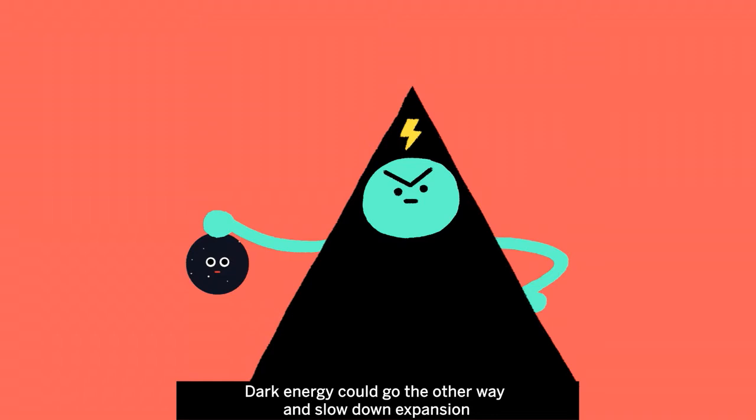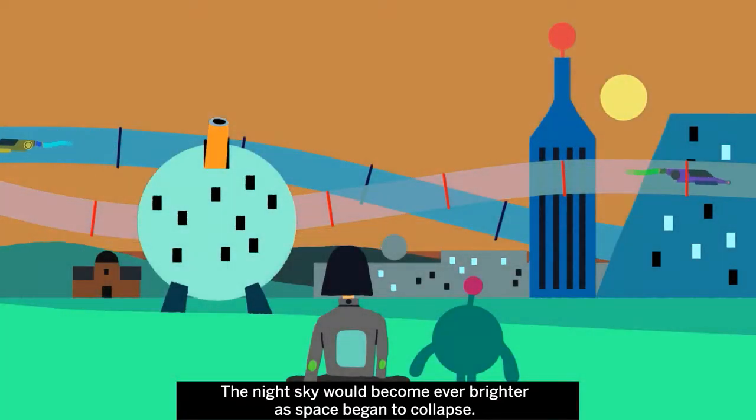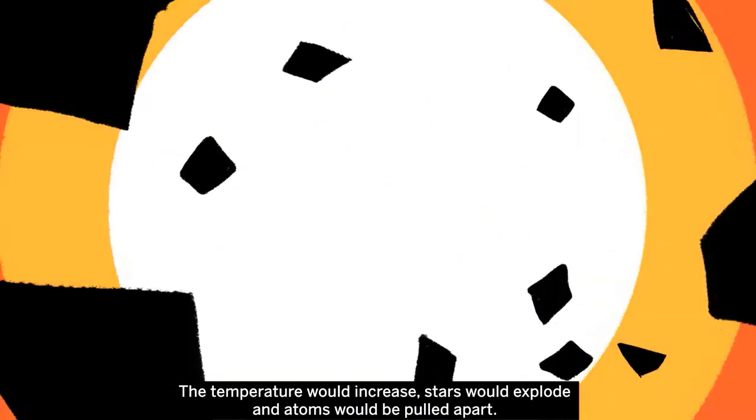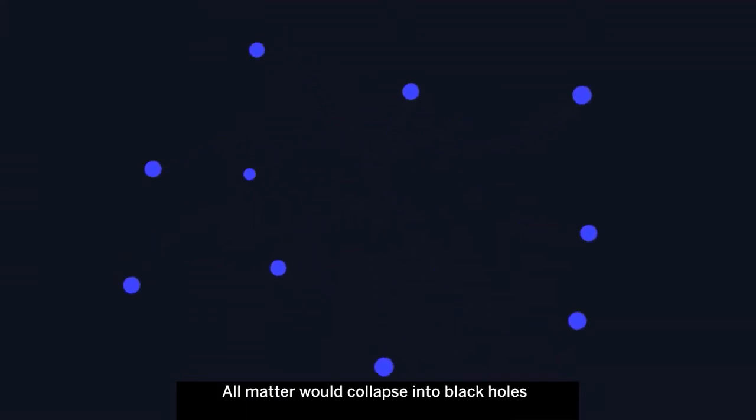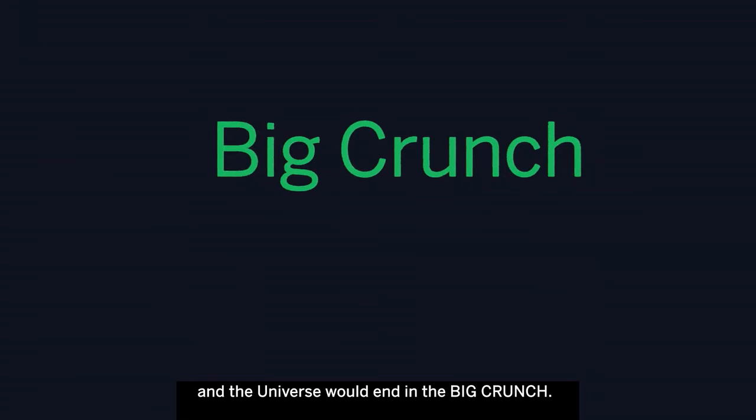Dark energy could go the other way and slow down expansion. The night sky would become ever brighter as space began to collapse. The temperature would increase, stars would explode, and atoms would be pulled apart. All matter would collapse into black holes, and the universe would end in a big crunch.